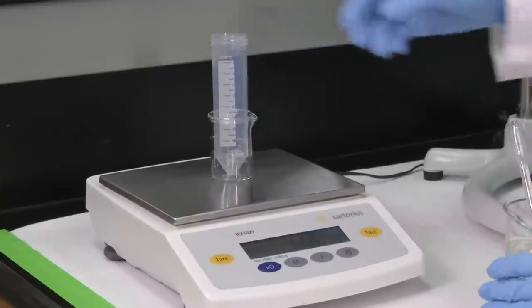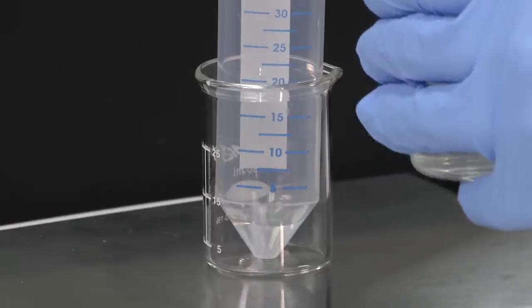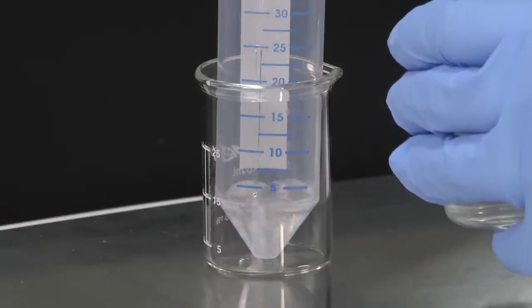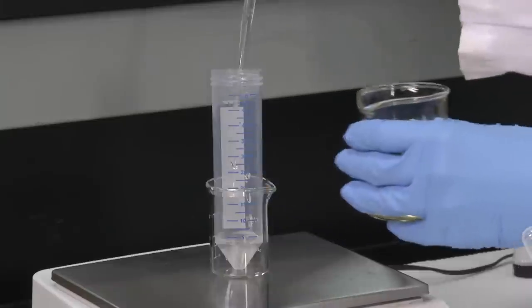Weigh 2 grams of protein solution into a conical 50 milliliter centrifuge tube. Then add 3 grams of oil to that tube.